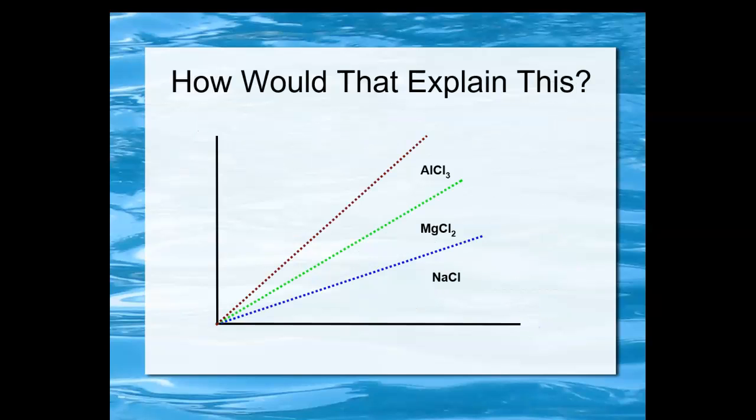Let's look. How would that explain this? Again, take a moment with your discussion partner to discuss how that might explain how it is that the sodium chloride had a lower conductivity than the magnesium chloride and the aluminum chloride had the highest conductivity at all.